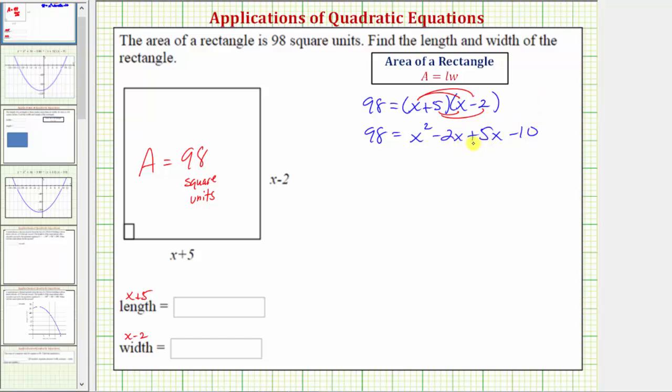Combining like terms, negative 2x plus 5x is 3x, so we have 98 equals x squared plus 3x minus 10.